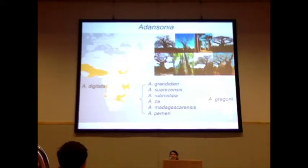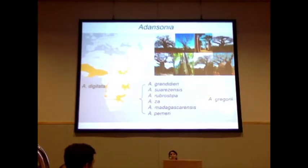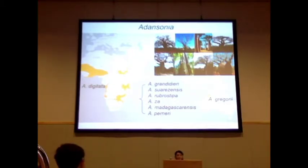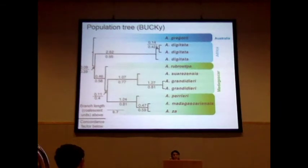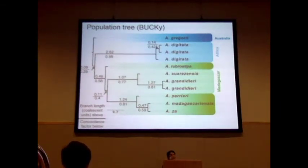To address some of these lingering questions, we used a targeted sequence-capture approach using a custom bait set that allowed for recovery of hundreds of low-copy nuclear loci. Our first analysis was a Bayesian concordance analysis to obtain a population tree shown here.